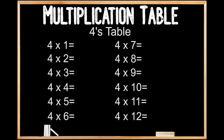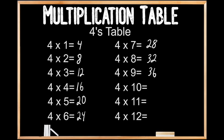4's table. 4 times 1 is 4. 4 times 2 is 8. 4 times 3 is 12. 4 times 4 is 16. 4 times 5 is 20. 4 times 6 is 24. 4 times 7 is 28. 4 times 8 is 32. 4 times 9 is 36. 4 times 10 is 40. 4 times 11 is 44. And 4 times 12 is 48.